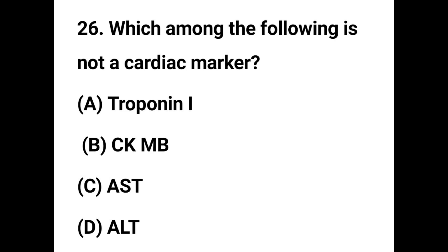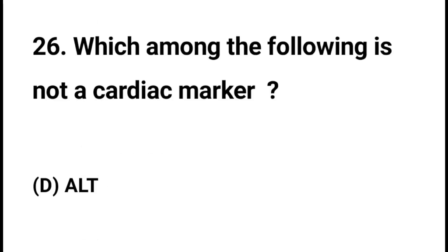Question number 26. Which among the following is not a cardiac marker? Option A - Troponin I, Option B - CKMB, Option C - AST, Option D - ALT. The correct answer is Option D, ALT. Alanine transaminase is not a cardiac marker.